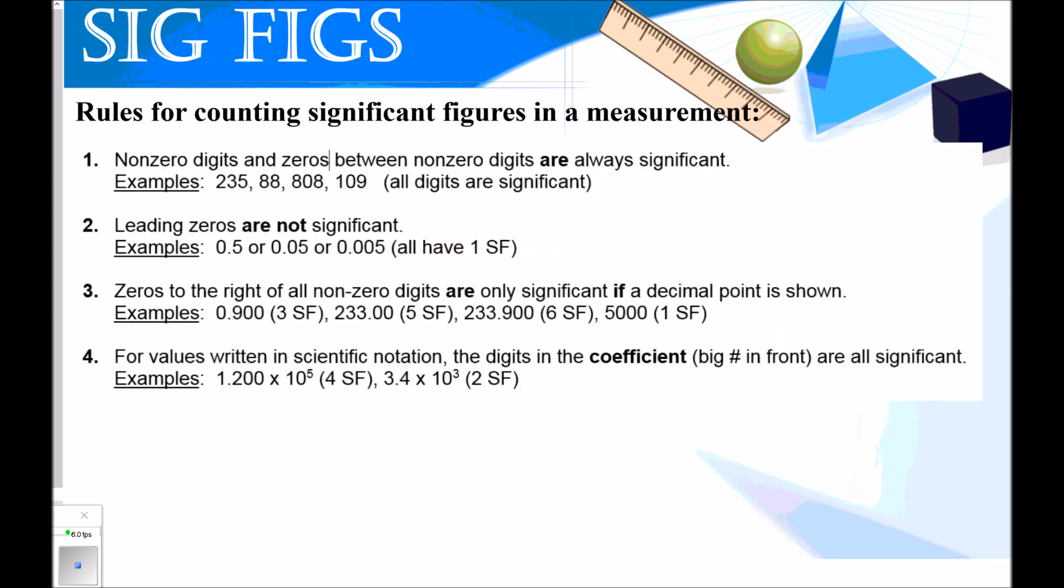Next I'm going to give you our rules for counting significant figures in a measurement. Our biggest question here is when do zeros count and when do they not count? First of all, number one, non-zero digits and zeros between non-zero digits are always significant. So all of these digits are significant. That would be three significant figures. This one would have two. This one would have three. And this one would have three. These last two, I would say this middle zero is something I call a sandwiched zero. It does count and it is significant because it's between two real numbers.